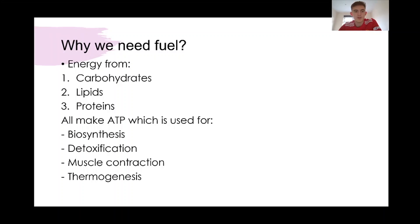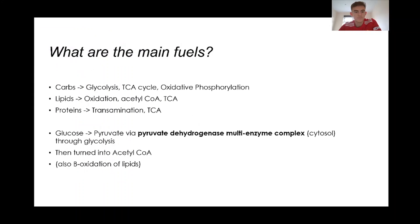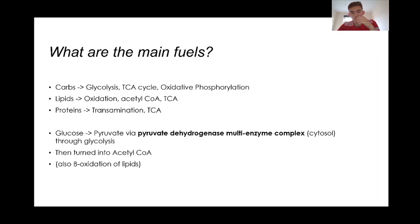Basically at some point we'll require ATP, so it is very important to have a constant flow of ATP in the body. Carbohydrates provide glucose which goes through glycolysis, then the tricarboxylic acid cycle or Krebs cycle, and then oxidative phosphorylation. Lipids go through beta oxidation to make acetyl-CoA, then TCA, and proteins go through transamination and TCA again. The Krebs cycle is very important because it yields the most amount of ATP.